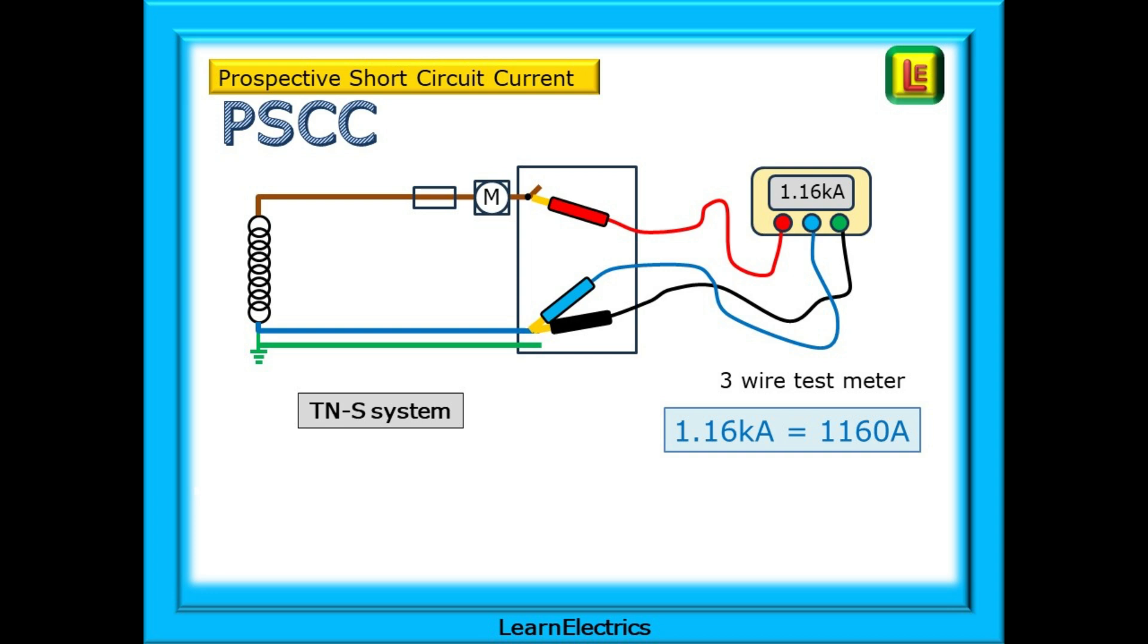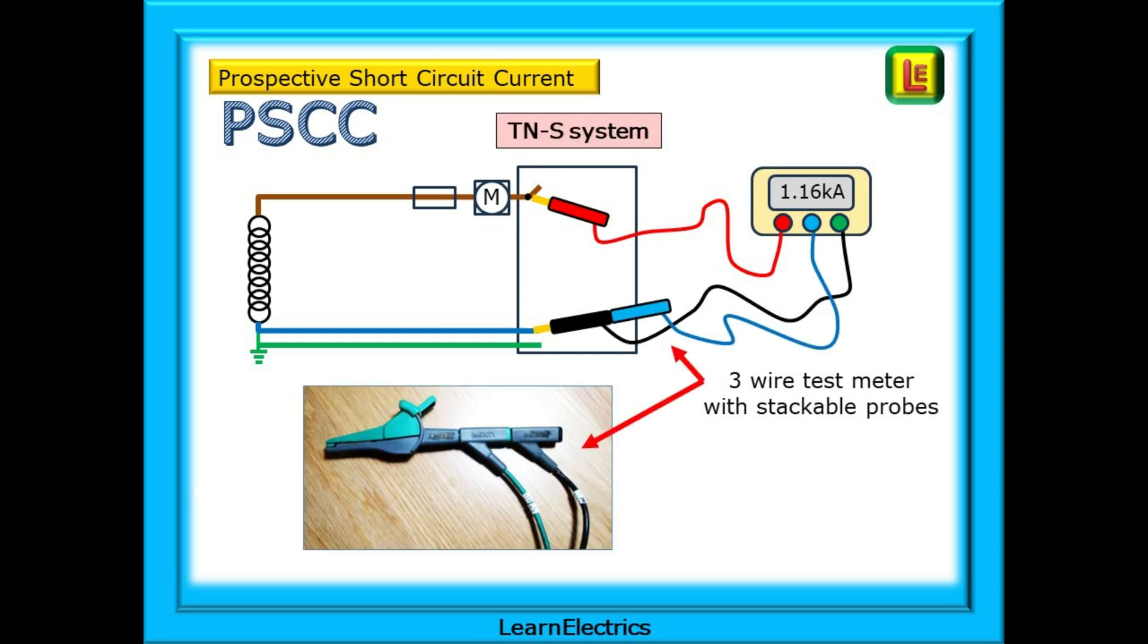It's exactly the same test lead and meter setup as the PFC tests. Nothing is different. The same settings of your test meter dials and positions of the test leads are used for PSCC. And the two wire test can be carried out if your meter does this. If your meter can only do three wire testing it can be useful to have stackable test leads. The probes will plug into each other as shown, making testing much easier and less of a juggling act. Stackable probes can be expensive but I find their ease of use outweighs the initial cost.